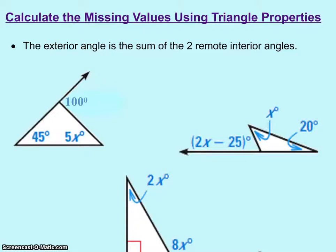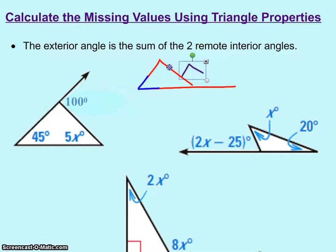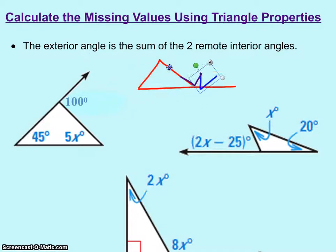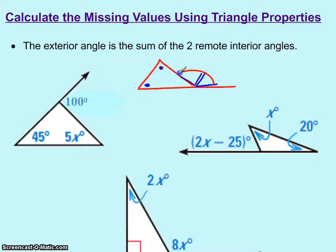This next section is going to be calculating the exterior angle using the two remote interior angles. When you draw a triangle and extend that third side, these two interior angles — when added together — will always equal the outside angle. So those two remote interior angles together always add up to equal the exterior angle.